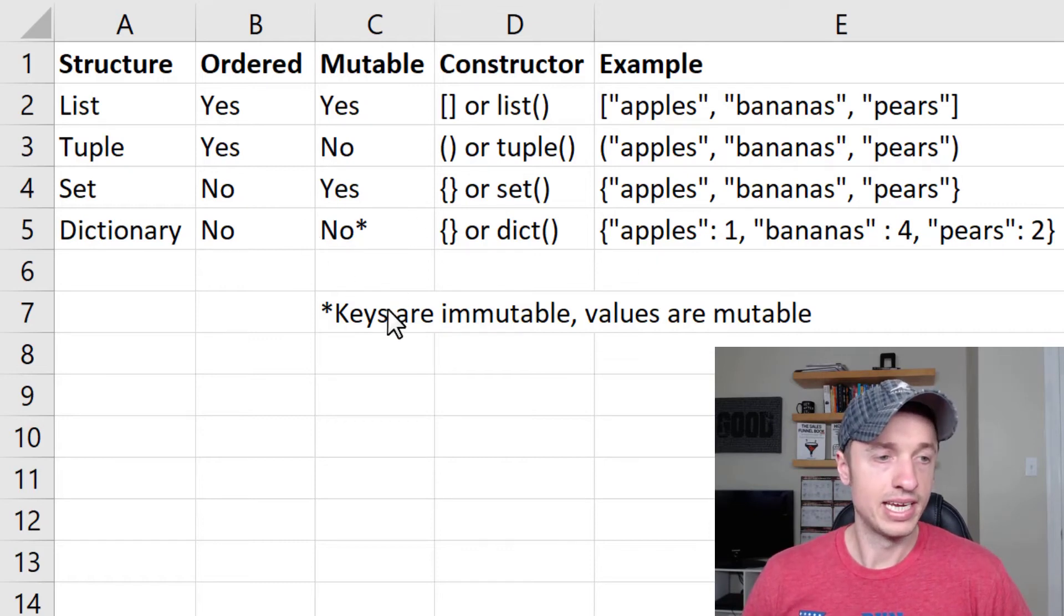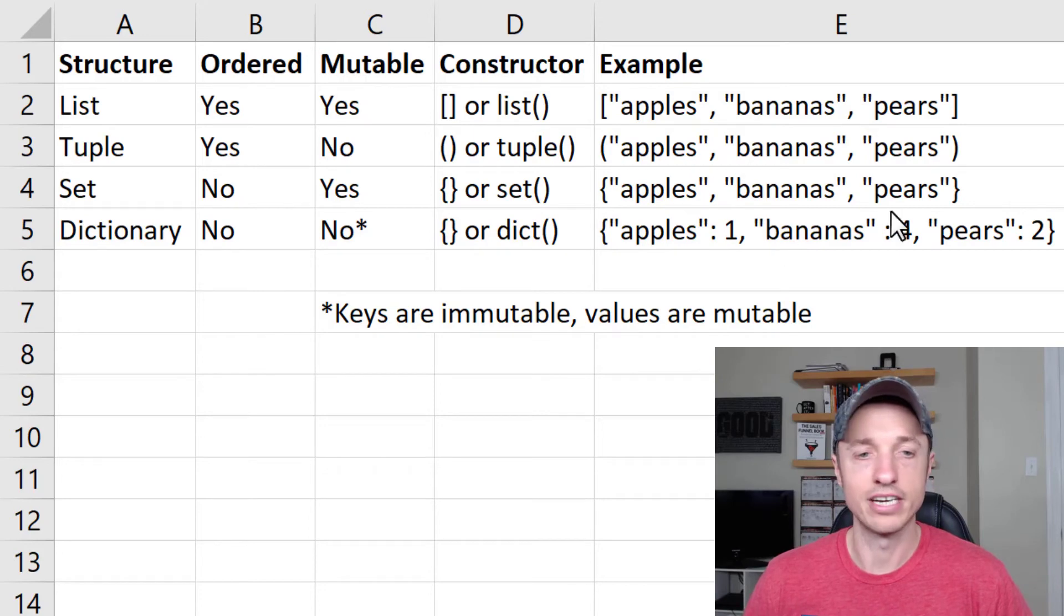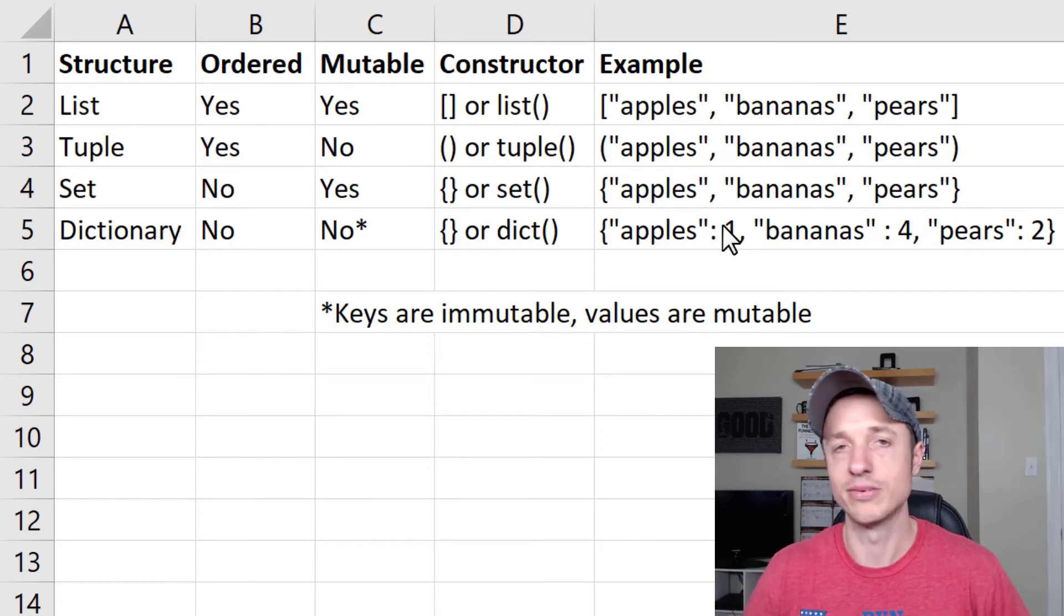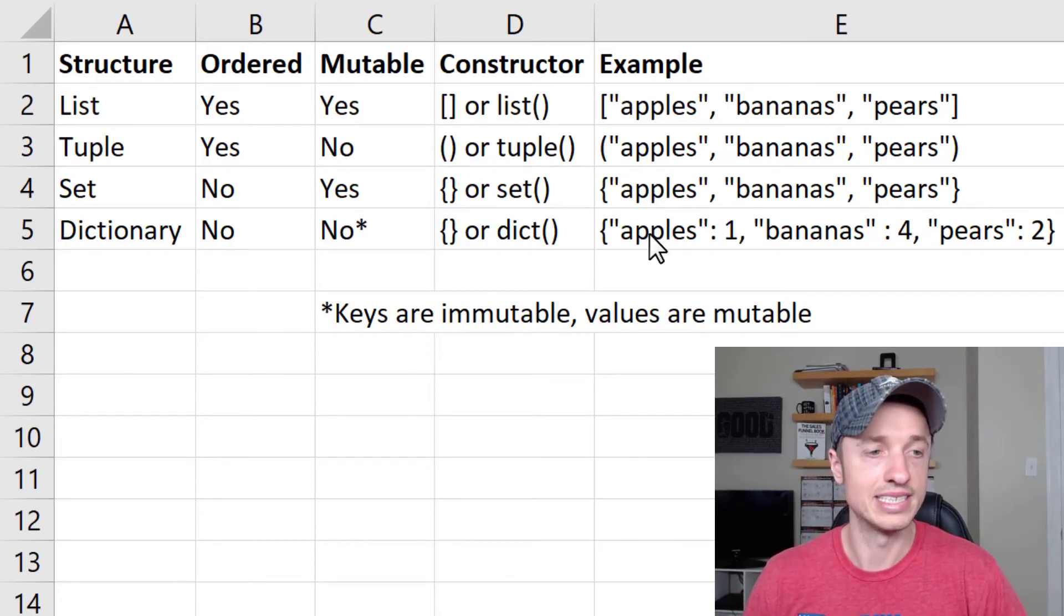So keys are immutable. We can't change the apples key or the bananas key or the pears key, but we could change the value of those keys. So instead of apples being one, we could have apples be two or seven or whatever. Like apples in our basket, we have seven. So we could change the value, but we can't change the key itself.